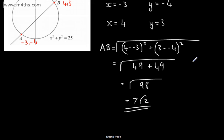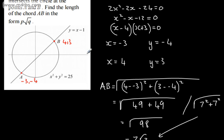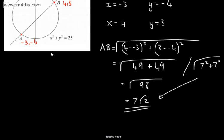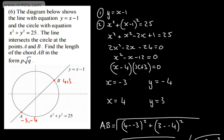At this stage, you could have just written this as the square root of 7 squared plus 7 squared, and gone straight to 7 root 2 from there. It's entirely up to you on how you want to do it. So the distance from A to B, or the length of the chord AB, is 7 root 2 units. OK, let's look at another one. So that's question 6.